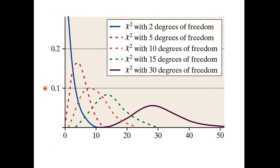Here's an image: notice if we start with a small amount of degrees of freedom, the blue line is two, all the way up to the purple line which is 30 degrees of freedom. Notice for the purple we have this nice, symmetric, normal-looking curve.